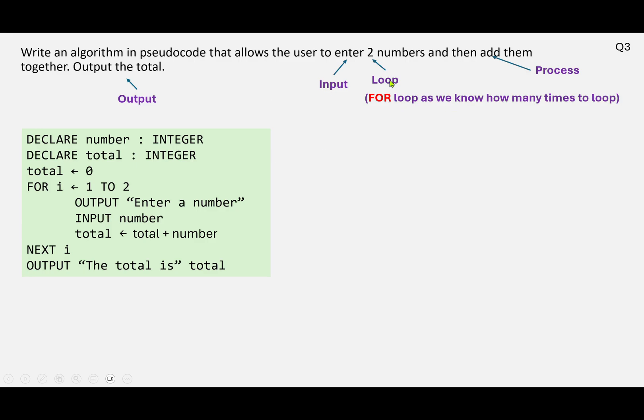We've done the input inside the loop. We've set the loop up. We've added the numbers together. Ah, and we need to do output. Total is total.